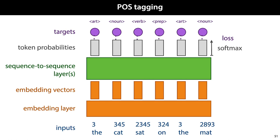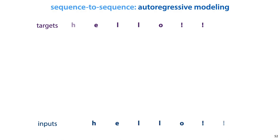In the rest of the lecture, we will omit the embedding layer, assuming that some suitable input representation has been chosen. One more interesting thing we can build with a sequence-to-sequence model is an autoregressive model.